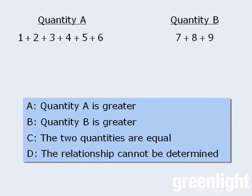The first one is pretty straightforward. When we evaluate quantity A, we get 21, and when we evaluate quantity B, we get 24. Since quantity B is definitely greater than quantity A, the correct answer here is B.